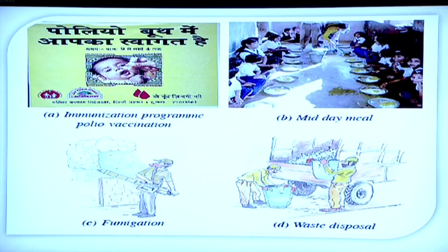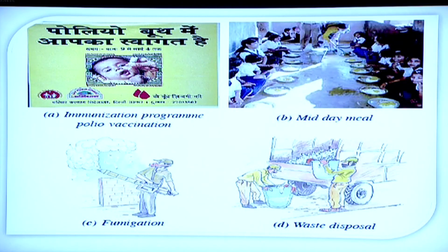Aren't we familiar with the polio Sundays? We need to abide by these requirements. When a Sunday is announced, if we fall into that category, we must visit these centers — this is the least we can do to ensure community health. The government also organizes fumigation during the rainy season, as accumulated water is a breeding space for mosquitoes that spread diseases like malaria, dengue, and chikungunya. The last activity shown is garbage collection by the corporation or governmental agencies.